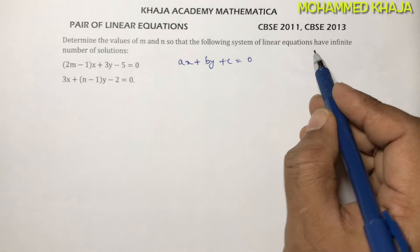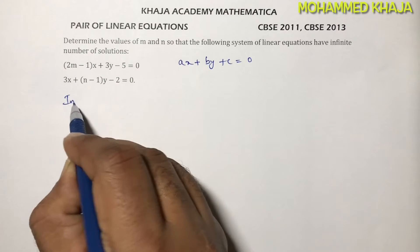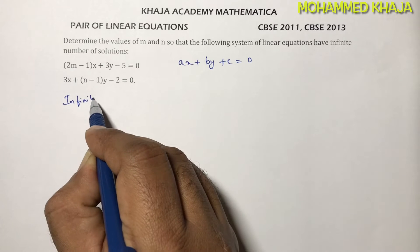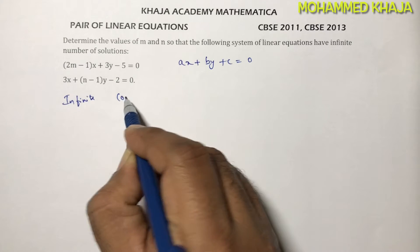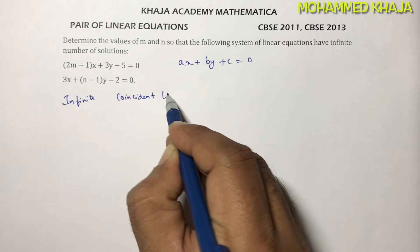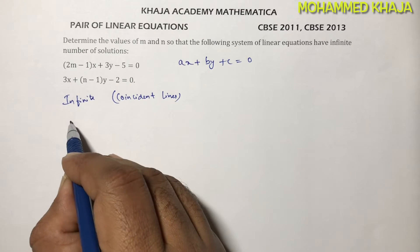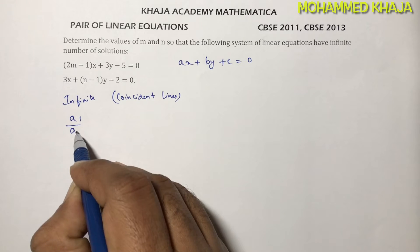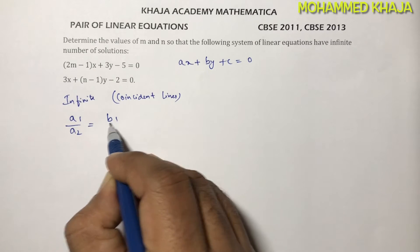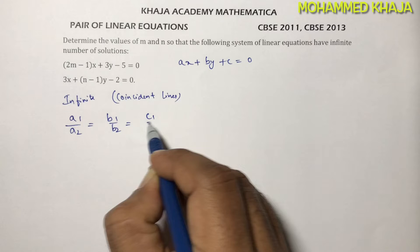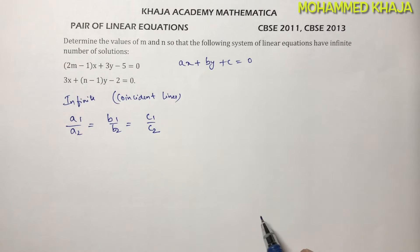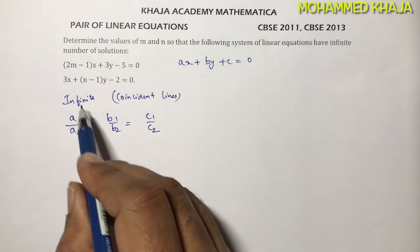For infinite solutions, we need coincident lines. The condition for coincident lines is a1 by a2 equals b1 by b2 equals c1 by c2. This is the condition for infinite number of solutions.